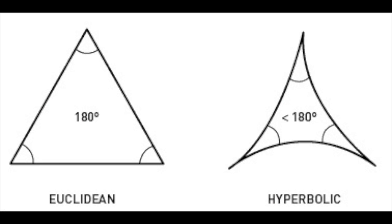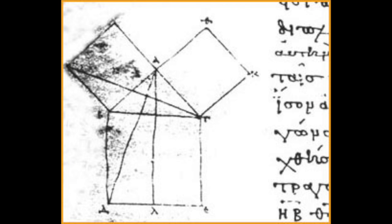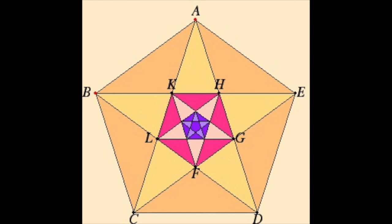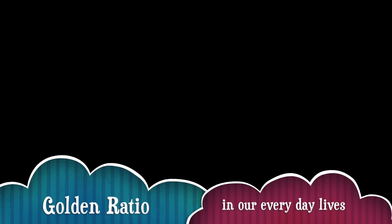Euclid, in Elements, referred to dividing a line at the 0.6180399 point as dividing a line in the extreme and mean ratio. This later gave rise to the use of the term mean in the golden mean. He also linked this number to the construction of a pentagram.